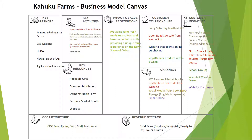Cuckoo Farms also takes farm-fresh produce and makes value-added products — a line of lilikoi jams, jellies, and syrup — which they bottle and sell to wholesale buyers. Wholesale buyers purchase your product and resell it to their own customers, such as a variety of stores throughout Oahu and even some wholesale accounts in Japan. They also have website customers who can order value-add products directly online and have them shipped.